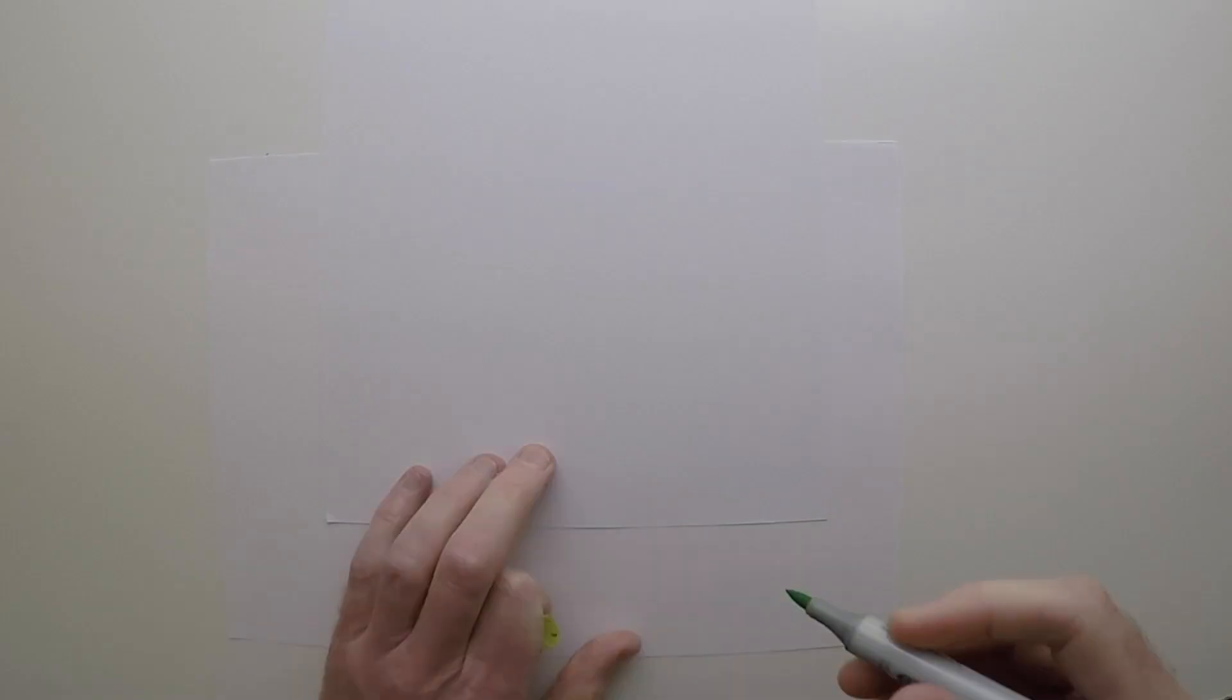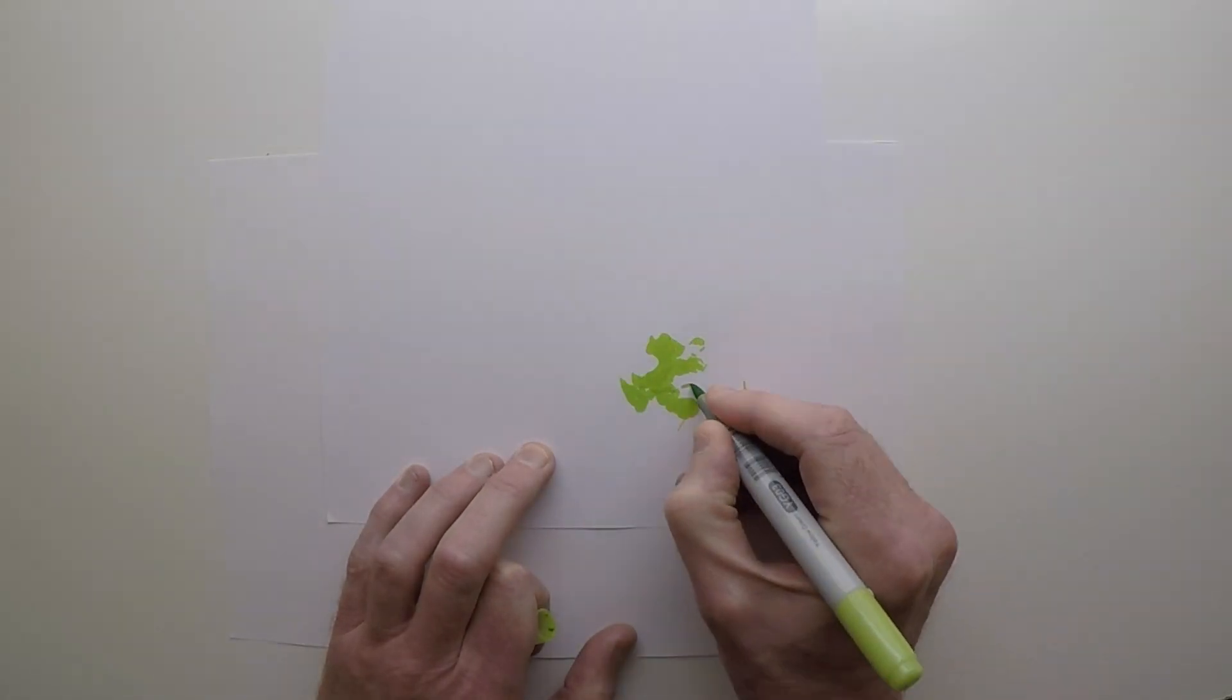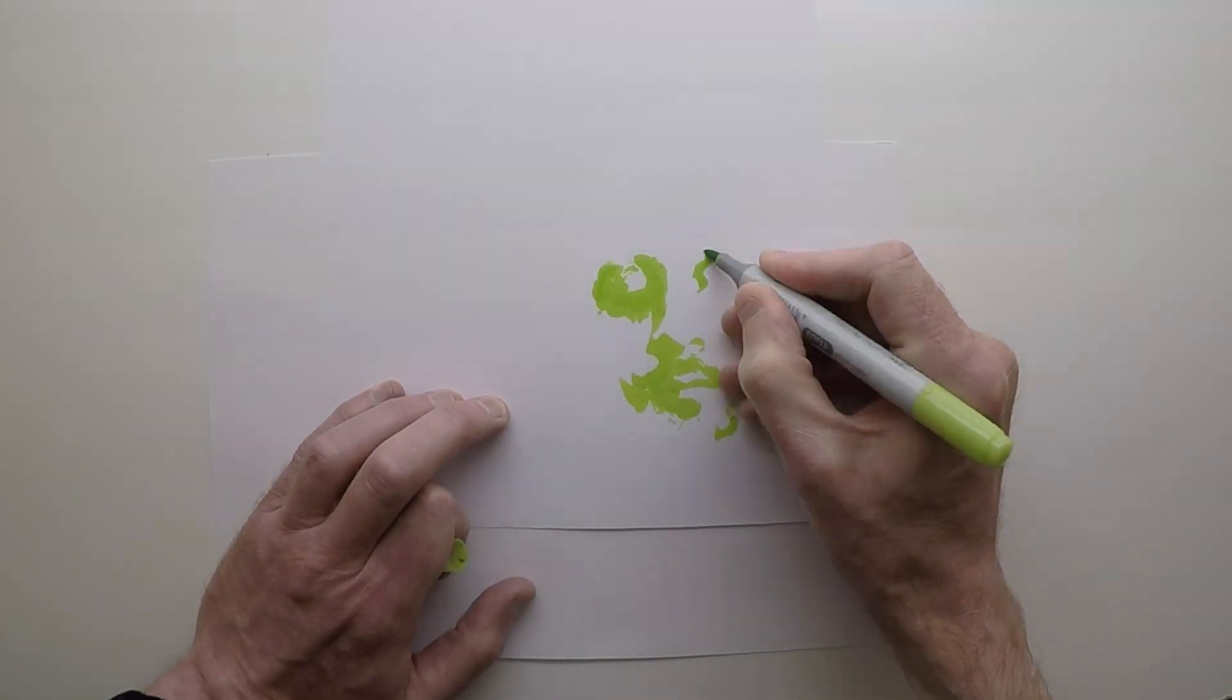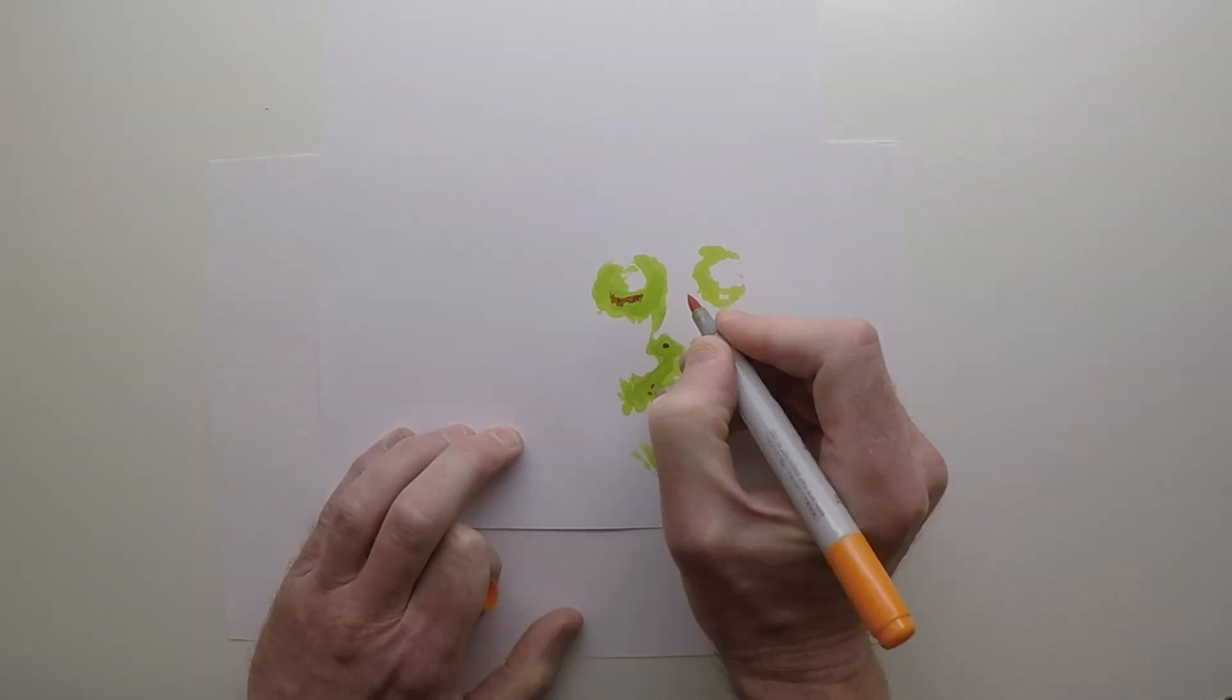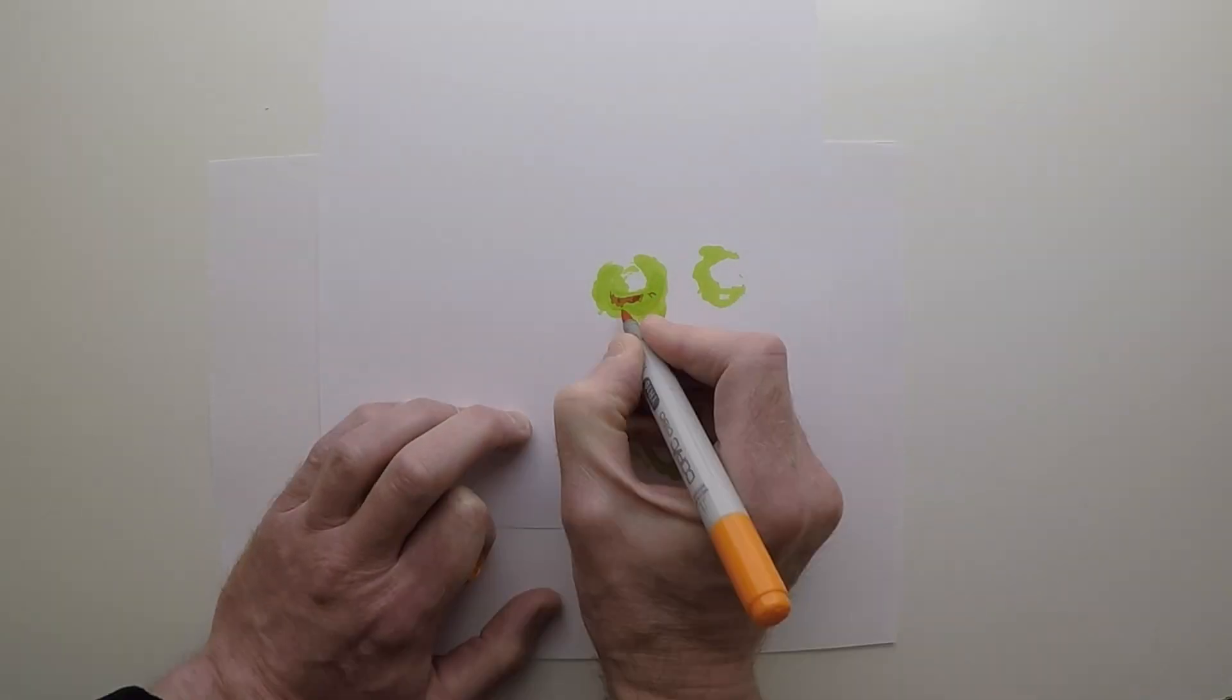Oh hello again. Just doing another quick portrait with Copic markers. This is a portrait of an Italian actor called Daniel Parisi. I think that's how you say his name.